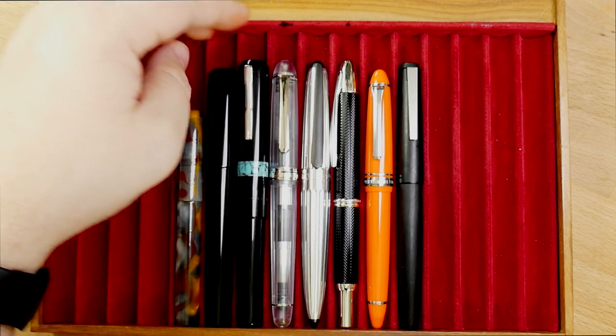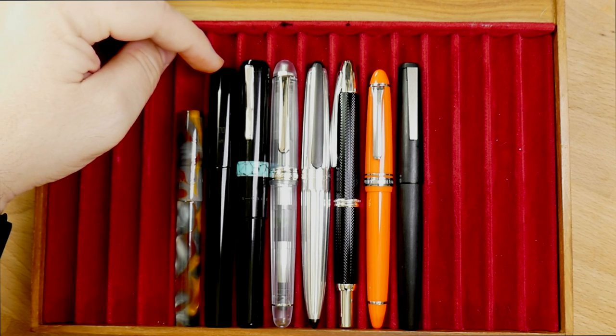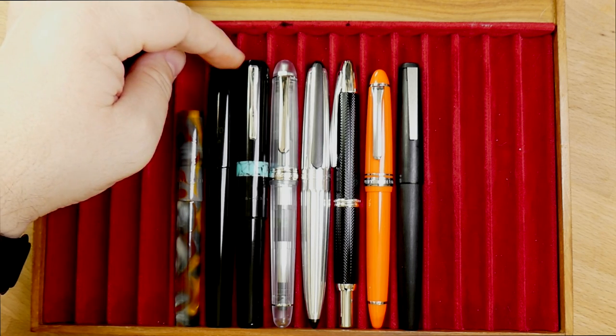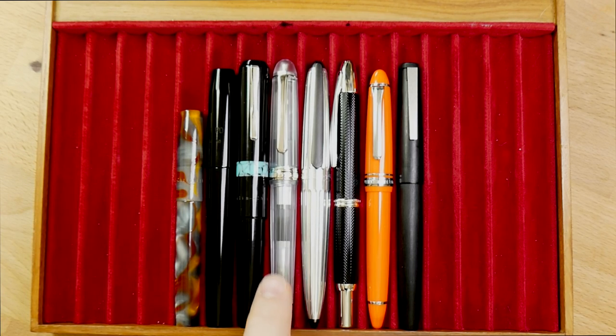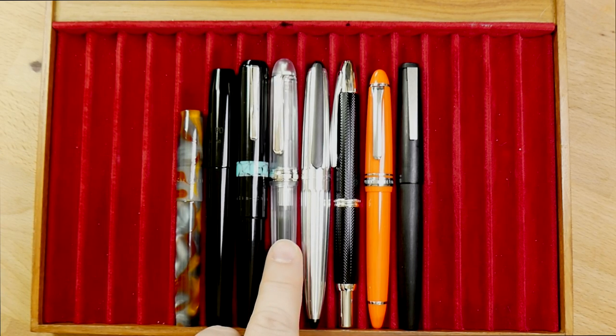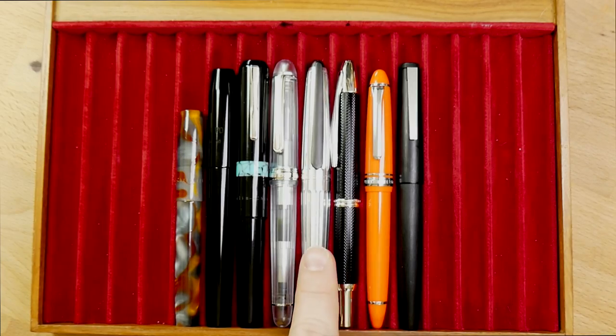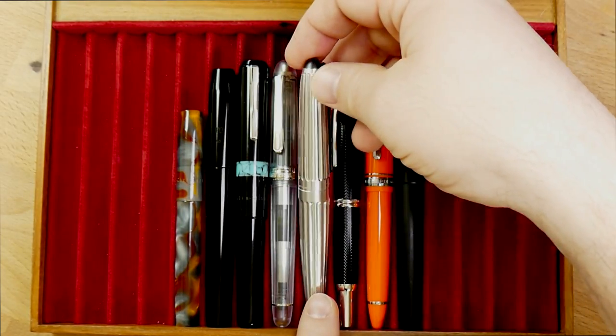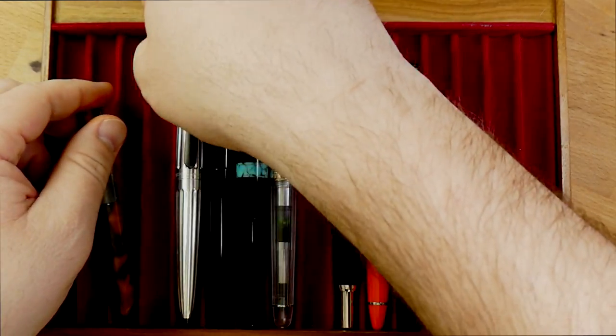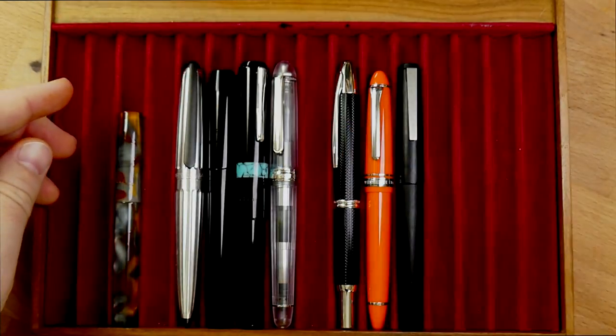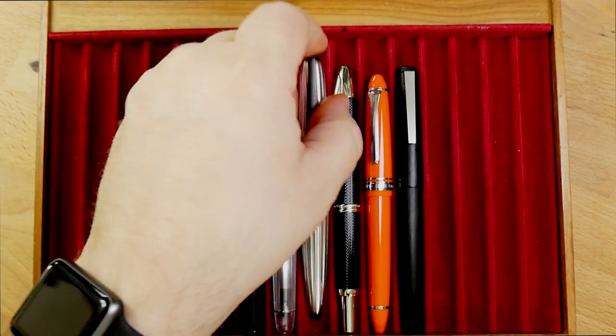Maybe a little bit of a, what do you call it? The finial is about the only thing that's bigger there. Then you have the Platinum 3776. This is the Nice Pure version. And then next to that, you have this here Diplomat Aero, which is around the same size actually as a 46. So if you like that Aero size, you're going to like the 46 size just fine too.